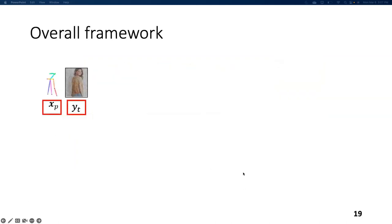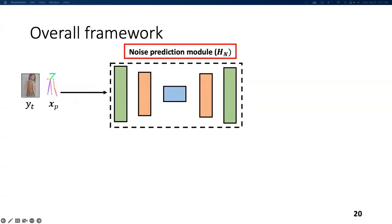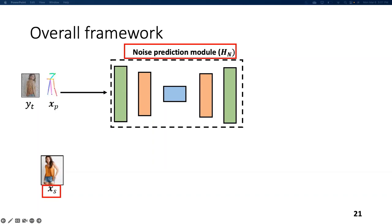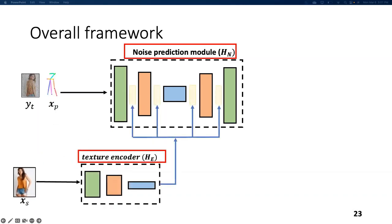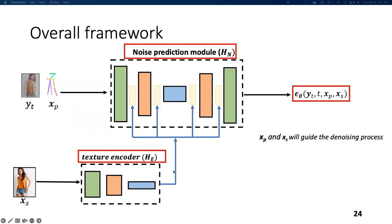I will start with the overall framework; each block will be explained in detail later. We take target pose XP and the noisy image YT and pass them through a noise prediction module based on standard UNet architecture. We take input image XS having a specific appearance and pass it through texture encoder HE. The output of the texture encoder is fused with the noise prediction module at different layers. The noise is then predicted at time T, conditioned on pose XP and style XS, guiding the denoising process so that the final image follows the given skeleton structure and style.